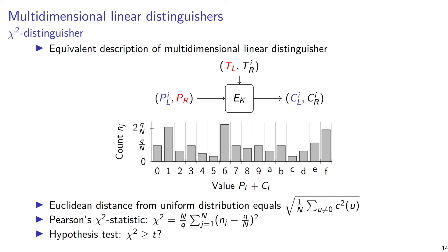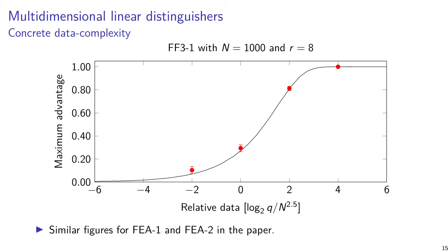We know more or less the expected value of that statistic, so we can easily do a hypothesis test using the chi-square statistic. This is essentially the same distinguisher as the multidimensional linear distinguisher. You can make a more accurate calculation of the data complexity and advantage reached for a given data complexity. This is shown for FF3 with the full number of rounds and the minimum domain size of 1 million. The red dots are experimental verifications — we can get an advantage of one quite easily using all the masks.